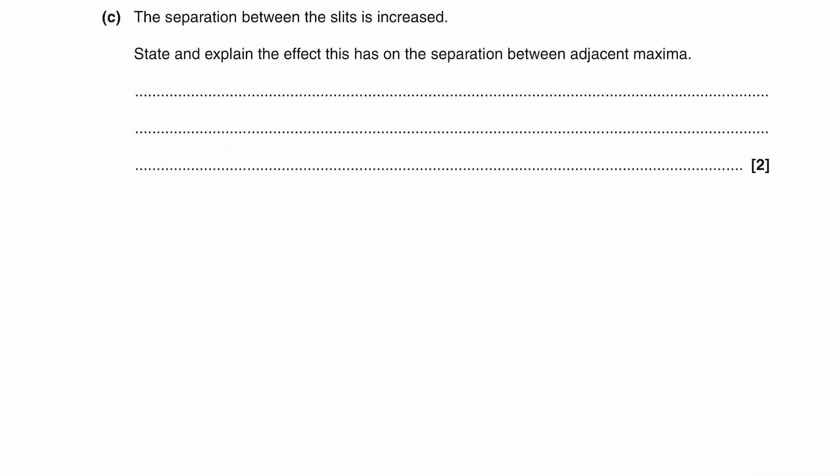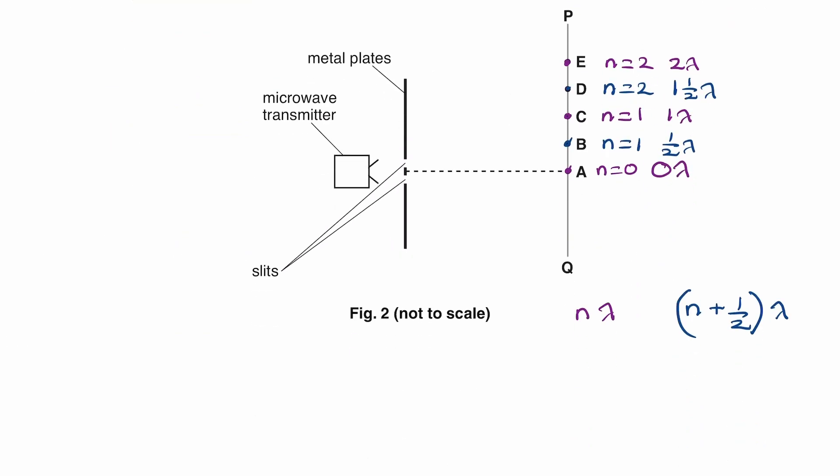And now for part C. The separation between slits is increased. State and explain the effect this has on the separation between adjacent maxima. Right, so the equation that we're using here is lambda equals AX over D. The symbol used in this equation vary from specification to specification. So I'll just explain what each symbol represents. So lambda is just wavelength. A is the slit separation. So going back to this diagram here, it's this distance here. That's the slit separation A. And then capital D is the distance between the slits and the screen. And then X is the fringe separation. So it's the distance between adjacent bright fringes. So this would be X. This would also be X.